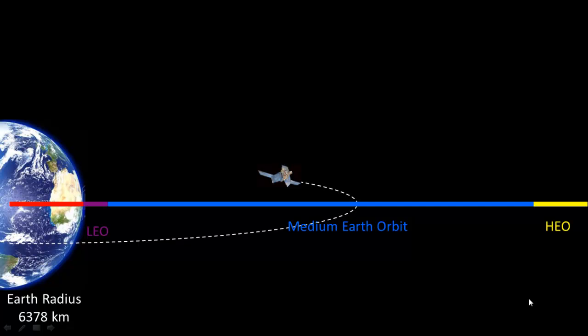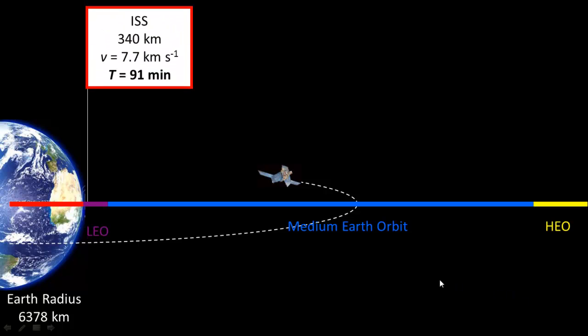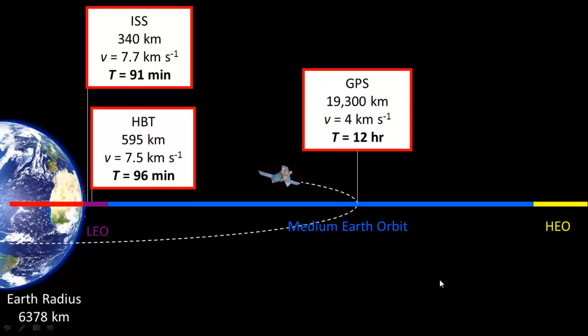Of all the orbits in the equatorial plane, only one has an orbital period of 24 hours. A satellite is falling around the Earth at a rate decided by the gravitational field strength. The further away from the Earth, the weaker the field strength, the slower the satellites fall around the Earth, and the longer the orbital period.